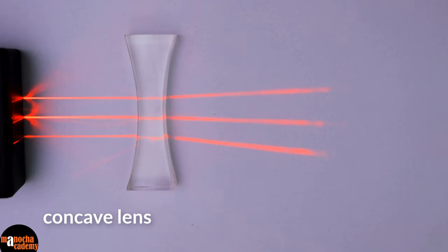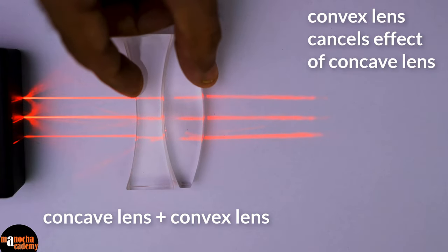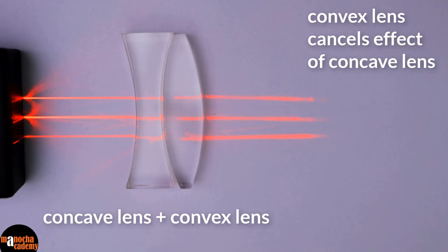Now if I add a convex lens here, wow, look what happened. The convex lens cancelled the effect of the concave lens and the rays of light come out almost parallel. The convex lens is a converging lens and the concave lens is a diverging lens. So they are cancelling the effect of each other.